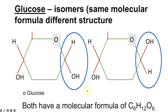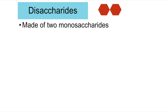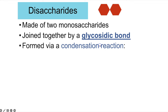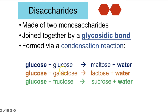Monosaccharides can be categorised by how many carbon atoms they contain. A hexose sugar (hex = 6) contains six carbons — for example, glucose. A pentose sugar contains five carbons — for example, ribose. The disaccharides are made of two monosaccharides joined by a glycosidic bond via a condensation reaction. The key disaccharides are maltose, lactose and sucrose — all three contain glucose, but differ in the second monosaccharide. Maltose = glucose + glucose; lactose = glucose + galactose; sucrose = glucose + fructose.